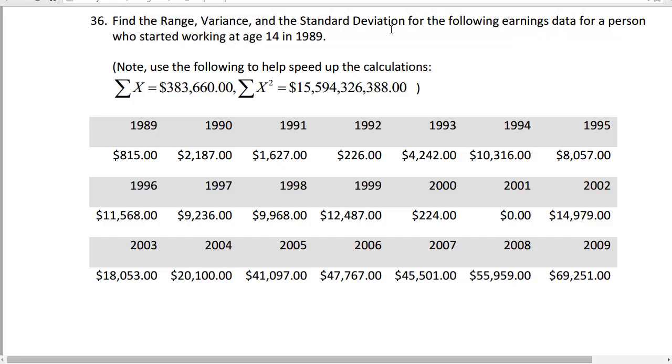Find the range, variance, and the standard deviation for the following earnings data for a person who started working at age 14 in 1989.